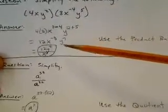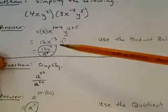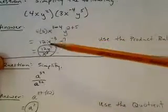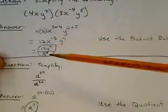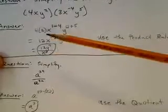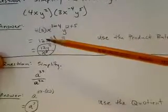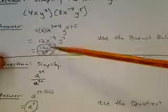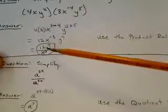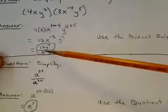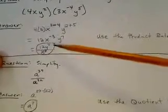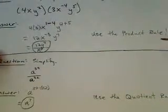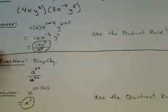In order to simplify so we have non-negative exponents: when we have a negative 3 as an exponent, we have to move that to the denominator and keep everything else in the numerator. So we have 12y to the 7th power over x cubed — final answer. We've used the product rule in simplifying this expression.